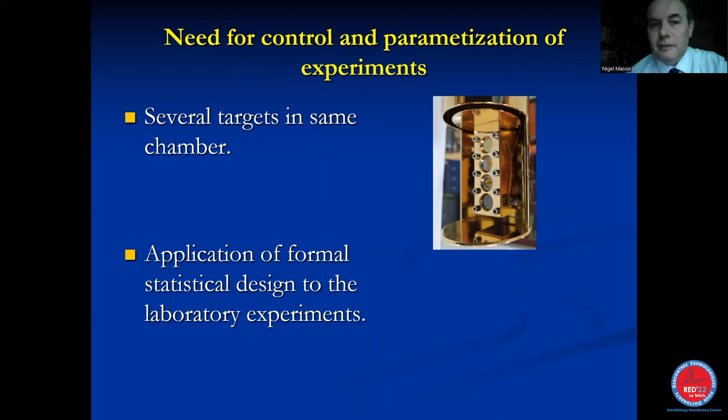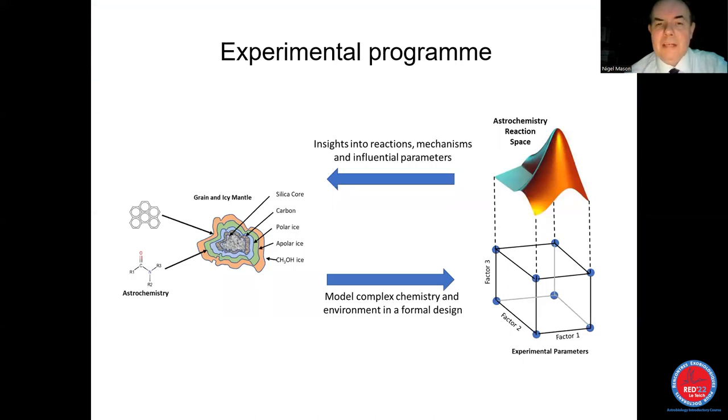Most importantly, we need to control and parameterize the experiments so that we can compare experiments in each other's labs and see if we are seeing the same effects. And to do that, we have to adopt a kind of statistical design for our laboratory experiments. And instead of doing one irradiation at time, maybe we can do three or four irradiations under the ice is prepared under the same conditions. And this is an example of such a holder that we use in Hungary.